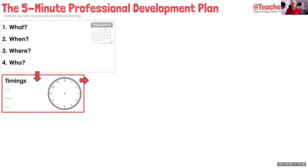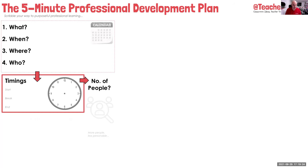Timings — during the day, at the end of the day, after a five-period day, a twilight, a Saturday event, or a full inset day for five hours. All these things are at play. The number of people in whole sessions, individual sessions, different rooms — lots of different factors to consider.